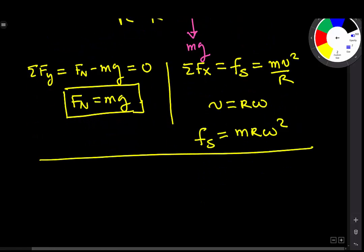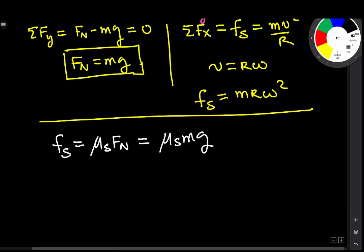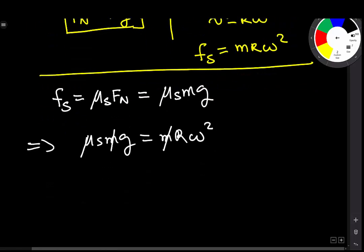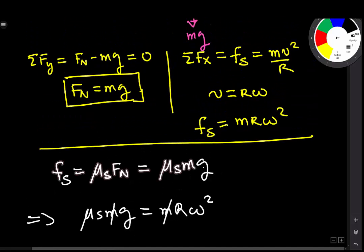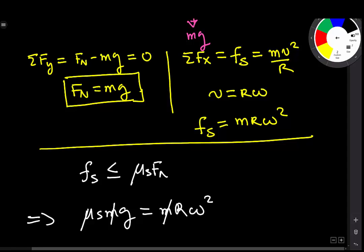But what is the definition of static friction? Static friction Fs is equal to mu S Fn, which will be equal to mu S Mg. This therefore means that mu S Mg is equal to M R omega squared. By definition, this is not true. This is a common mistake. By definition, Fs is less than or equal to mu S Mg. This is because Fs is a limiting friction force.